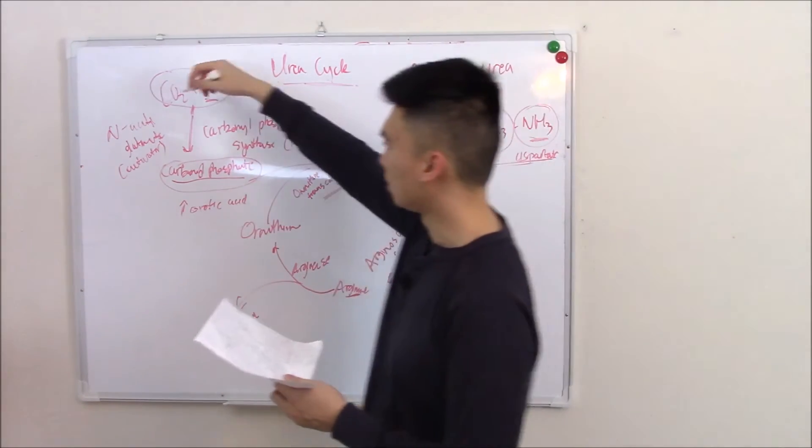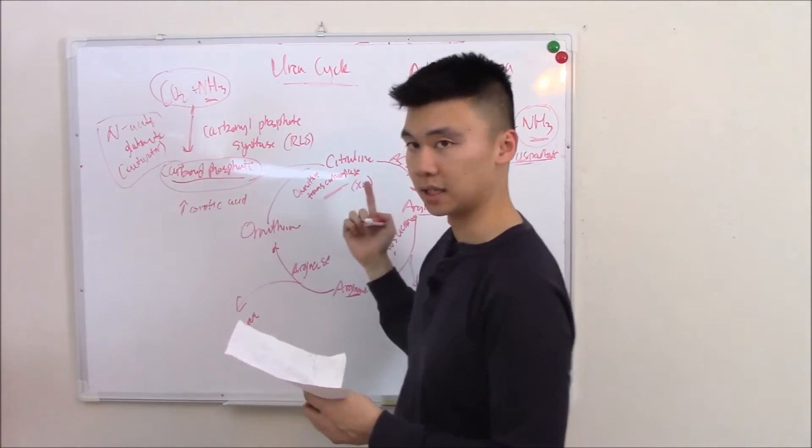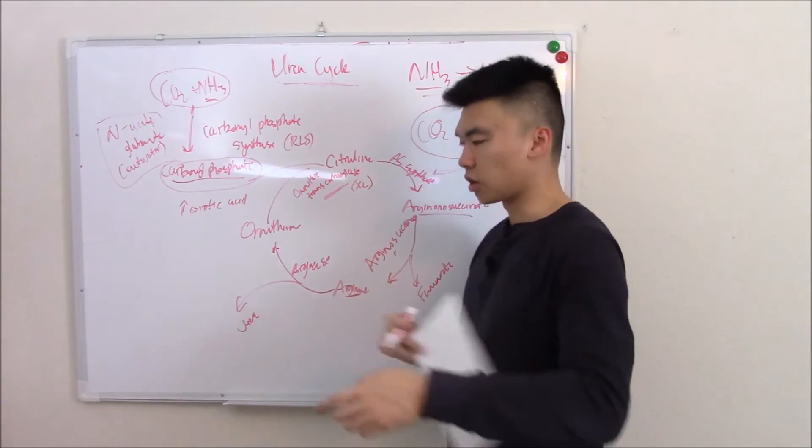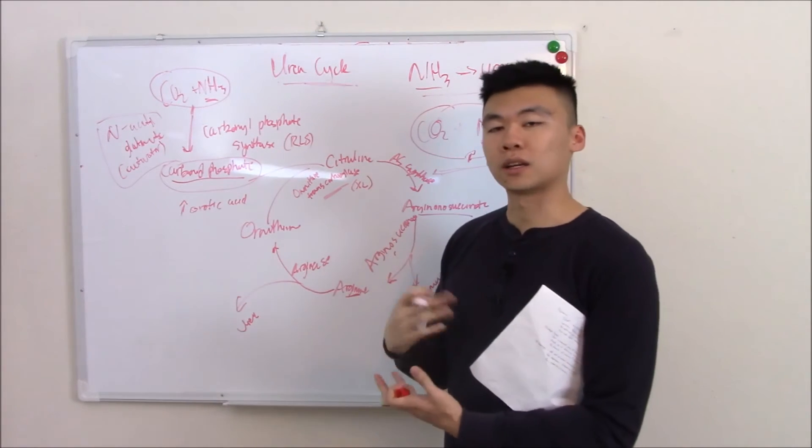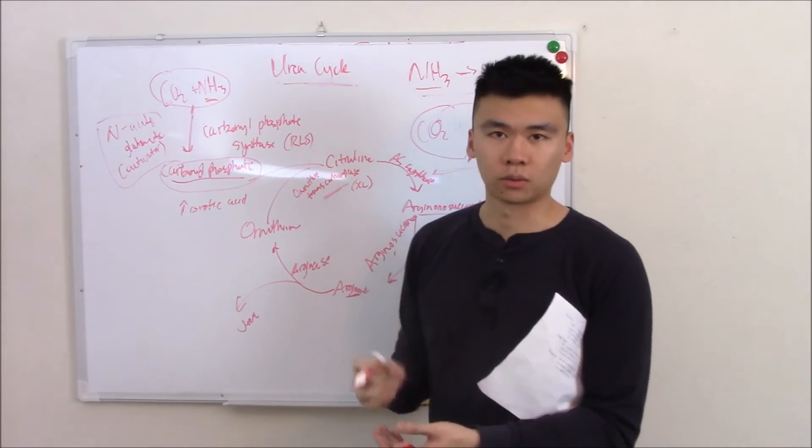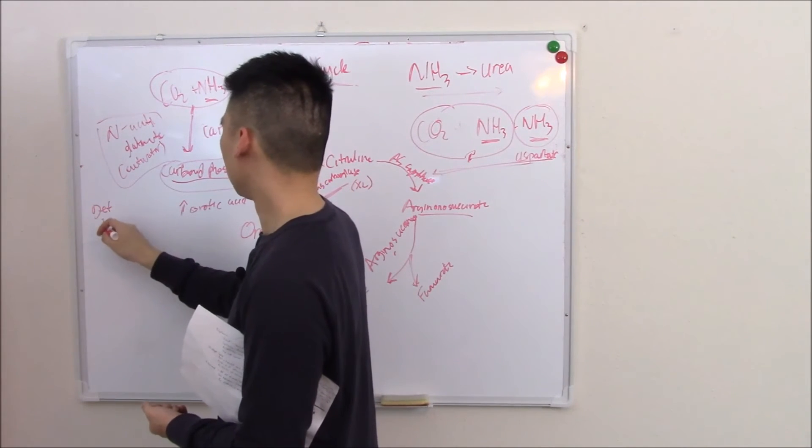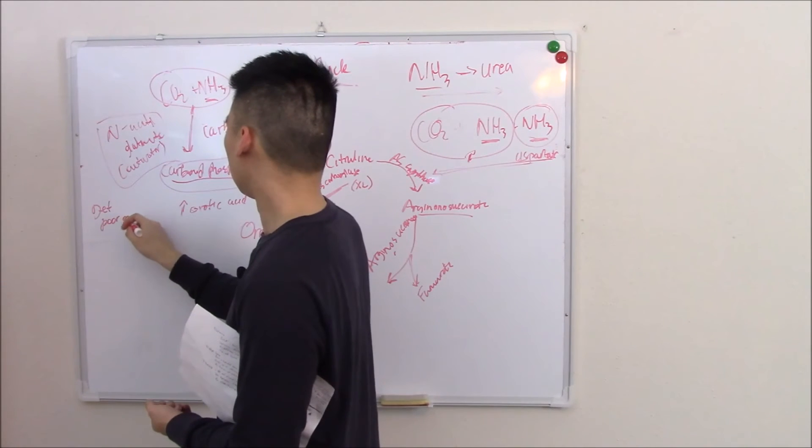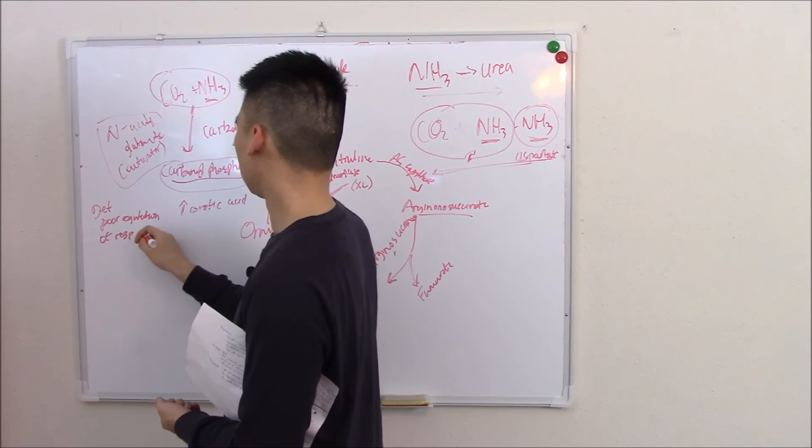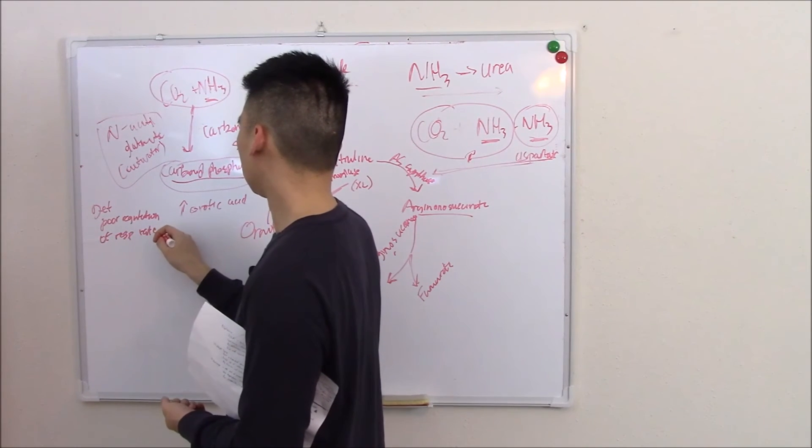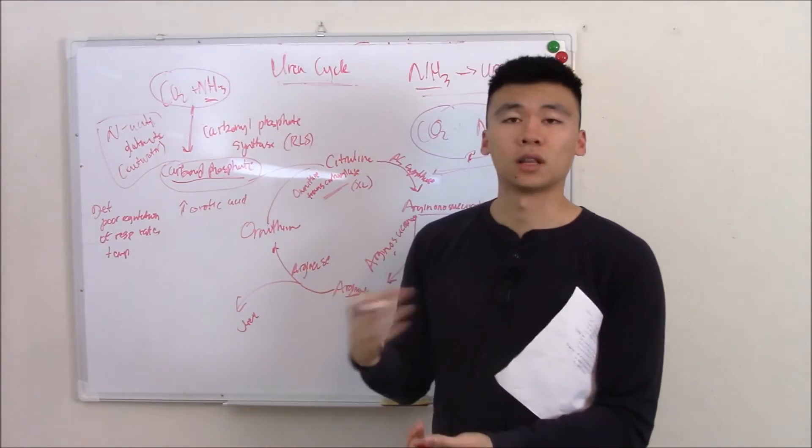Another thing you can be lacking is this activator. If you're missing this activator, then again you can't go into the cycle. You're going to have a buildup of that nitrogenous waste, causes neurotoxicity. You'll have poor regulation of things like respiratory rate and temperature. So deficiency here causes poor regulation of resp rate and temp, just due to the neurotoxicity of all that built-up nitrogenous waste.